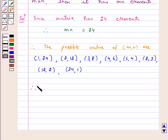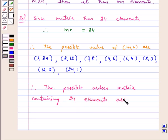Therefore, the possible orders of a matrix containing 24 elements are 1×24, 2×12, 3×8, 4×6, 6×4, 8×3, 12×2, and 24×1.